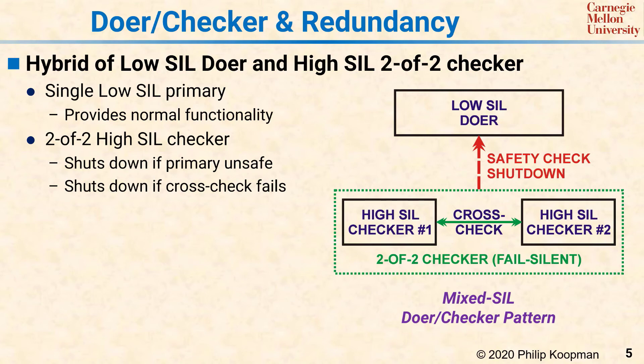At this point, you're noticing that we're using three computers to do the job of one. But the reason this can still be a win is that in many systems, much of the software does not have to be safety-critical—only a small amount does. This pattern lets you put the non-critical software into the doer and have a much simpler, smaller checker piece of software operating in the 2-of-2 checker hardware.